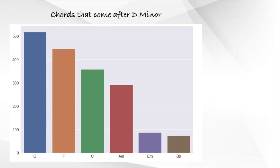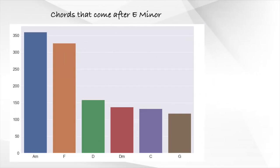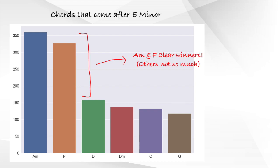The next graph shows the top chords that come after D minor. Here we can see that again, the G major chord wins, but not by such a large proportion as compared to C major's case. Next, we have E minor, our least common chord out of the 6 diatonic chords. We can clearly see that the E minor chord likes to lead into either the A minor or the F major chord, and the others much less.